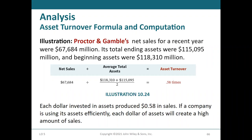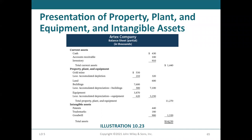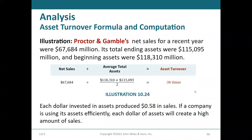Asset turnover is a measure of how efficiently we're using our assets to create sales. You take net sales divided by average total assets. Average total assets is beginning total assets plus ending total assets divided by two. For example: beginning total assets of $44.1 billion, ending $44.5 billion — average is $44.3 billion. Net sales of $63.4 billion divided by $44.3 billion average total assets gives an asset turnover ratio of 1.43.